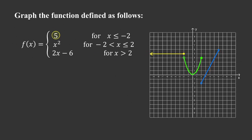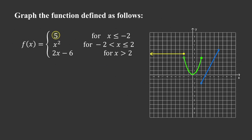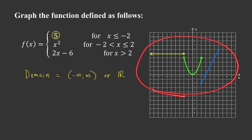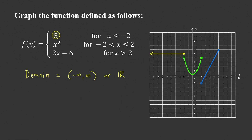This graph satisfies the vertical line test, as expected for a function. The domain is the set of all real numbers. For the range, if you draw a horizontal line at or below y equals negative 2, it won't intersect the graph — that point is not included. The only resulting y values are real numbers greater than negative 2, so the range in interval notation is negative 2 to infinity, excluding negative 2.